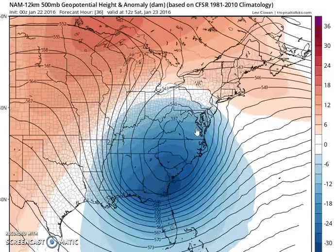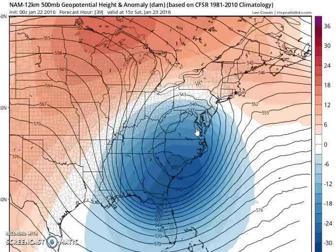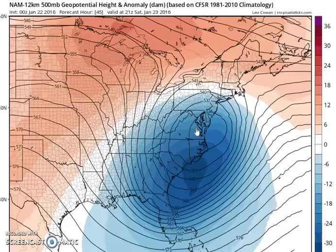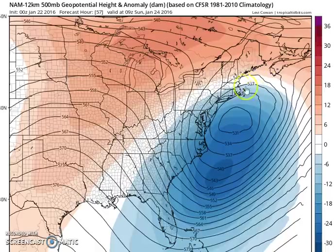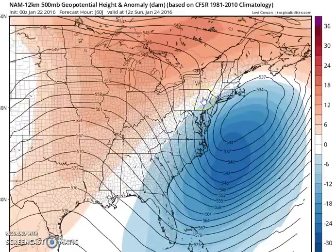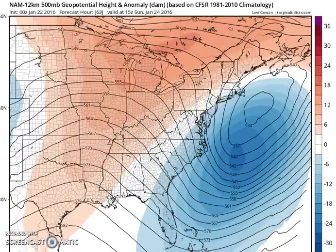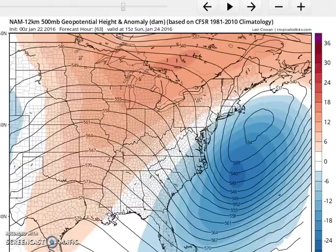If you want to believe the NAM — and this model used to be a very good short-term model, though a lot of people have shied away from it — I like to look at it because it often catches things that the global models don't in the short range. If you look at the upper low, centered just east of Norfolk, Virginia, it moves almost straight northeast and puts us pretty much under its influence as it moves out.